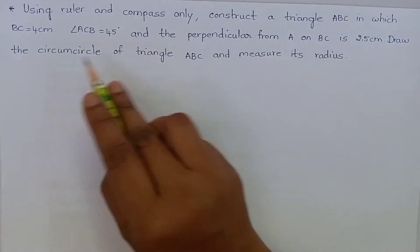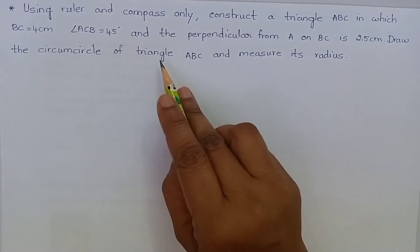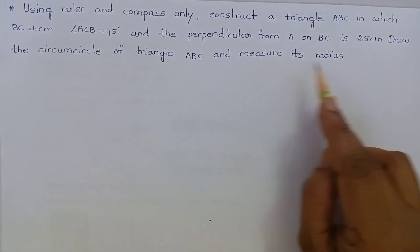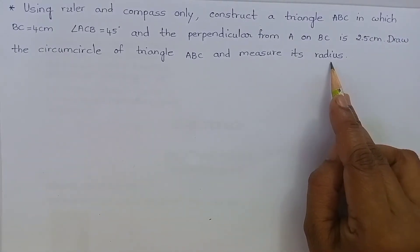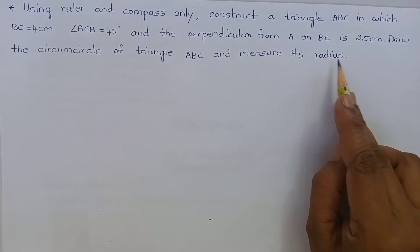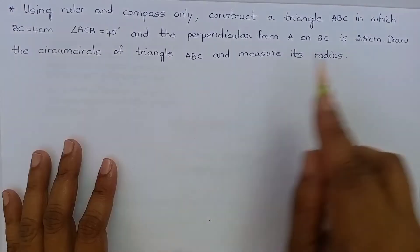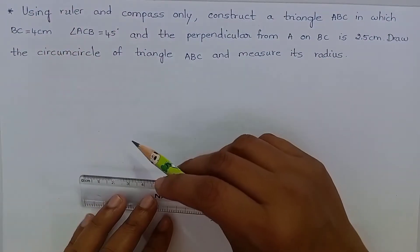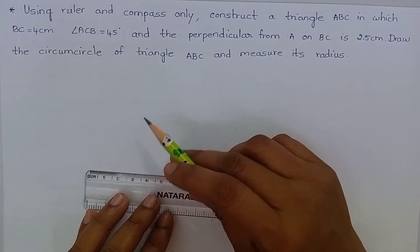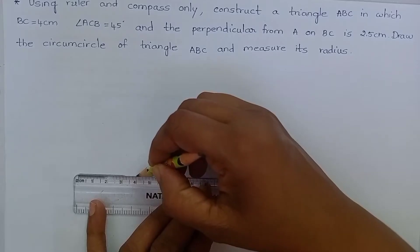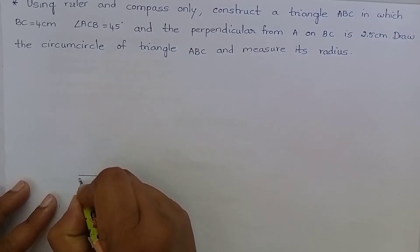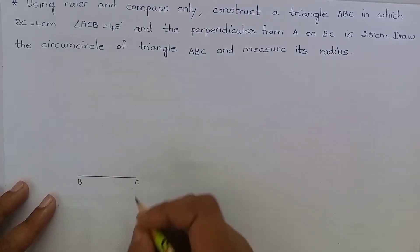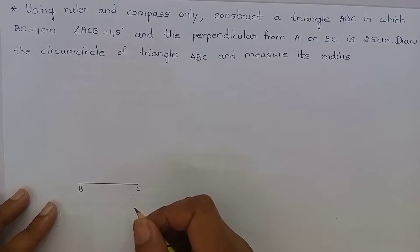Draw the circumcircle of triangle ABC and measure its radius. First, let us draw a triangle according to the given measurements. Here BC is 4 cm. Measure 4 cm. BC is 4 cm.